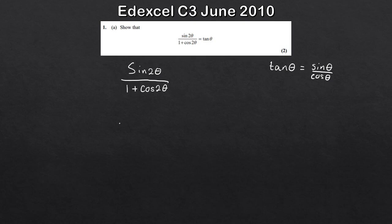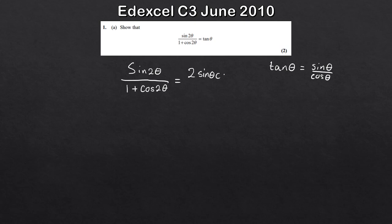So let's manipulate this expression into sine θ over cos θ. There are a few things you should always be looking out for — any identities that you can use. Straight away, the fact that this is sine 2θ and I've got a cos 2θ suggests I'm going to have to use my double angle formulas. So sine 2θ — nice and easy to remember — that's just 2 sine θ cos θ, so that's my numerator. Then 1 plus cos 2θ — cos 2θ is a little bit tricky to remember and there are a few different ways to express it.